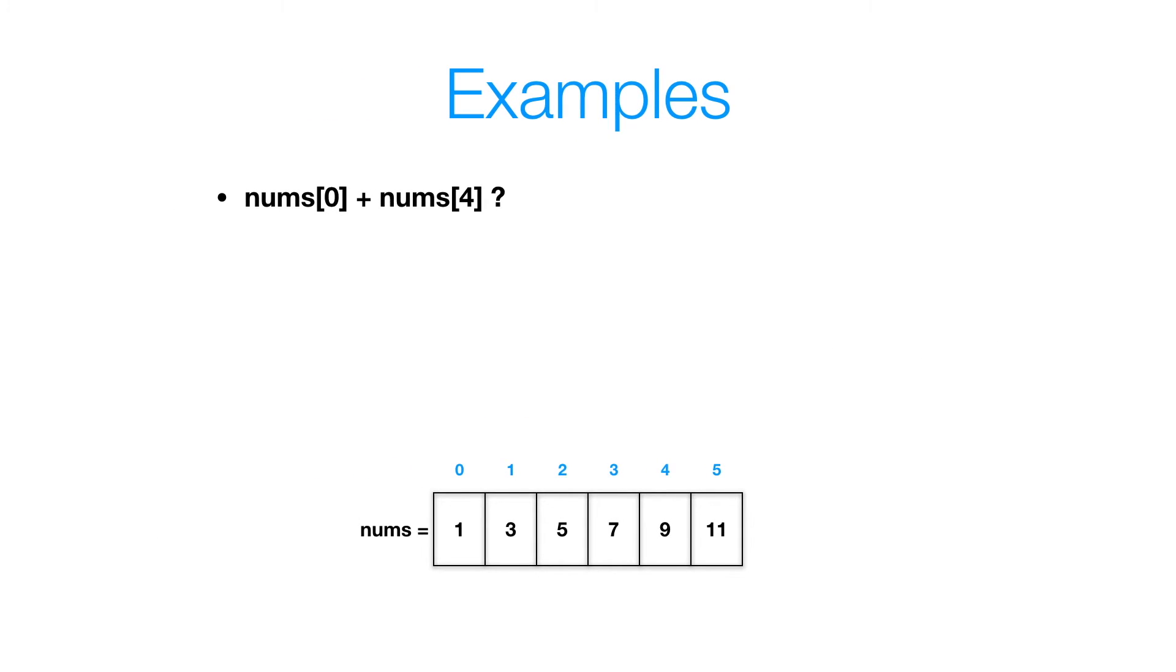Here are some examples. I want you to try and figure out this for yourself. So if my array, in this case the name is nums, I want you to figure out what is nums at index zero plus nums at index four going to give me. You can pause the video, and then when you're ready, press play. So let's get to the solution. For nums of zero, that's going to give us the value one. For nums of four, that's going to give us the value of nine. And for nums of zero plus nums of four, that's essentially going to give us one plus nine, which gives us a total of 10.